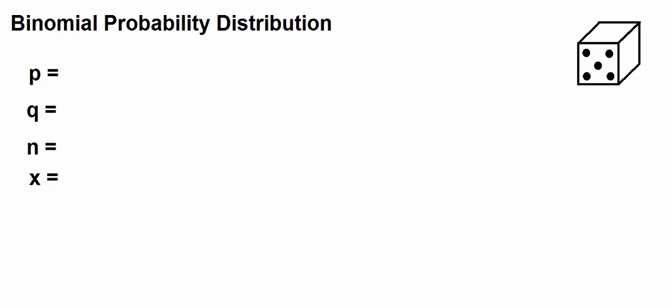So binomial, the term binomial, the root is bi, which means two, kind of like a bicycle, in a situation where you have two clear possible outcomes. Perhaps it's yes and no, I support or I don't support. Perhaps it's success or failure, but it's a situation where you have two clear possible outcomes.